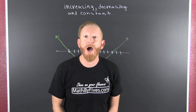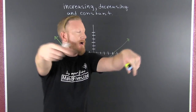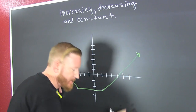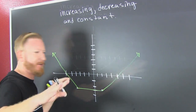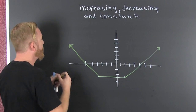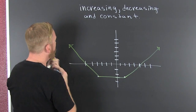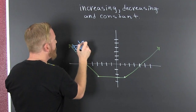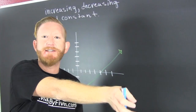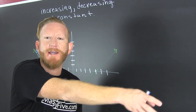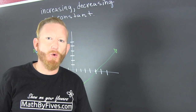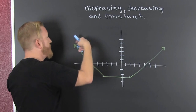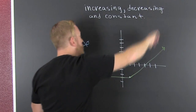Increasing, decreasing, and constant — what does that look like from a graph? If we're on a tech deck — you remember those — and you're going from left to right. We're always going in increasing order of X when we're looking for increasing, decreasing, and constant.